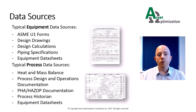Typical sources of process data include heat and mass balance, process documentation such as P&IDs, PFDs, HAZOPs, and PHAs, as well as design specifications. You can also use process data storage systems like OSI Pi.